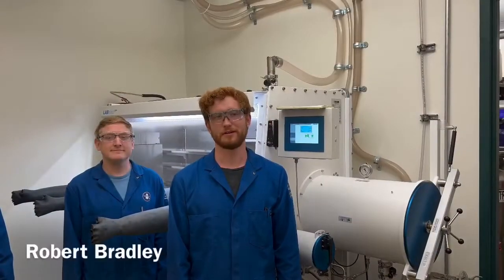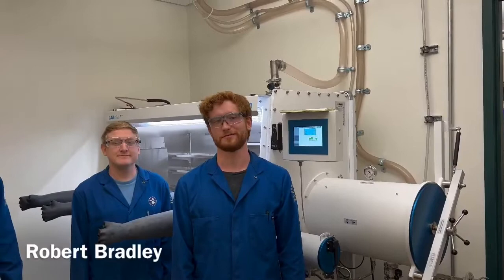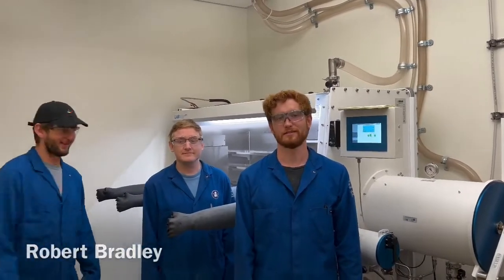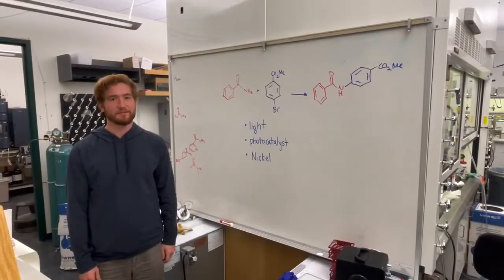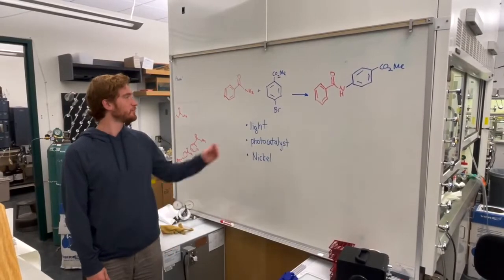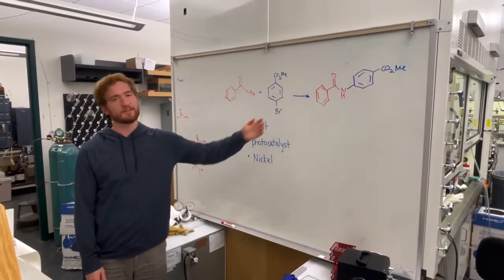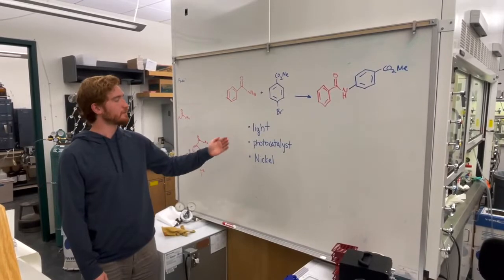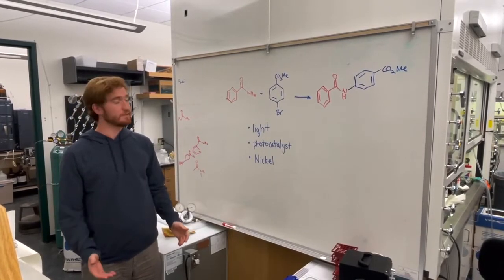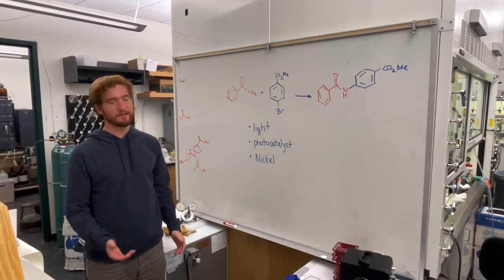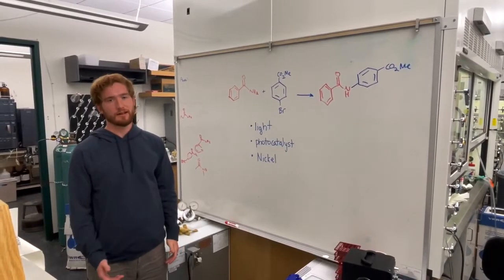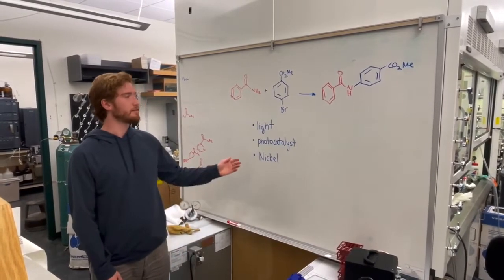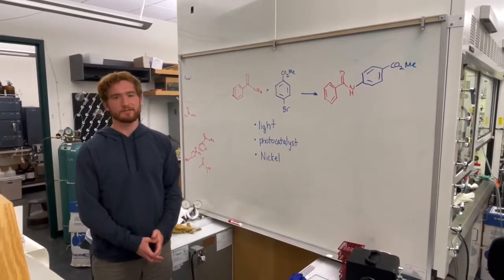Today we're going to show you how we use light and mild conditions to form new chemical bonds. First I'm going to show you guys how we can couple two organic molecules together through the use of light, a photocatalyst, and nickel. Normally this kind of chemical reaction requires greatly elevated temperatures, but in our lab we're learning how we can harness light in order to allow these chemical reactions to occur.